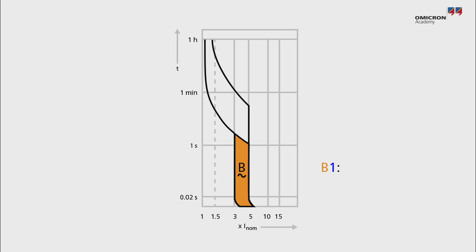a B1 rating means that the MCB will instantaneously trip currents in between three to five times the nominal current, with the nominal current being one amp.